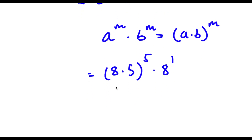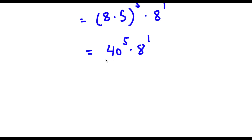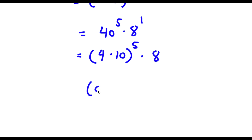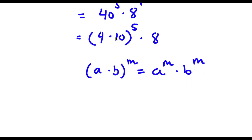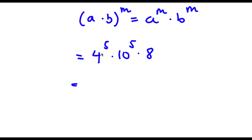Now 8 times 5 is 40, so I have 40 to the power of 5 times 8. Now 40 is the same thing as 4 times 10, so I have (4 times 10) to the power of 5 times 8. Using the rule (a times b)^m = a^m times b^m, this becomes 4 to the power of 5 times 10 to the power of 5 times 8. Now 4 is the same thing as 2 squared, so I replace 4 with 2 squared, giving me 2 squared to the power of 5 times 10 to the power of 5 times 8.